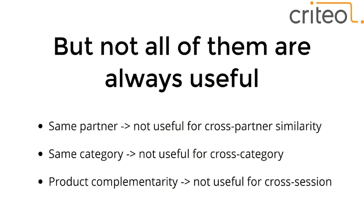From this model perspective, websites and categories form graph communities more connected inside than between them. But not all communities are useful — recovering the partner structure of the graph is not very useful for cross-partner similarity. If we map all eBay products together, this doesn't help us make cross-partner recommendations. The same applies to category structure and product complementarity. Our main problem is recommending products to users who have never been on eBay but have visited other websites.